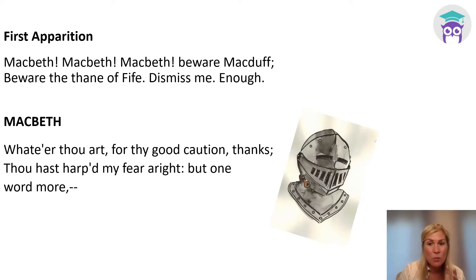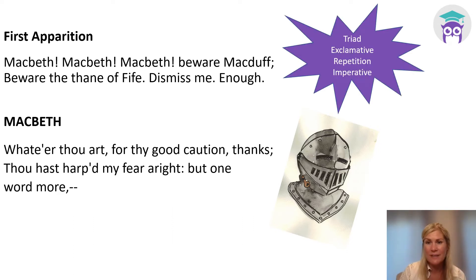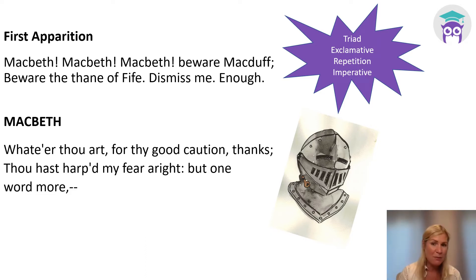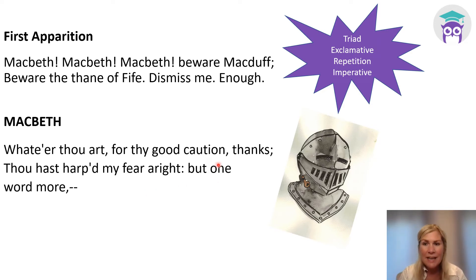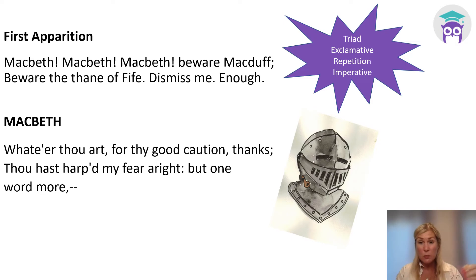The first apparition appears — the one with the armoured head — and it fits the prophecy: 'Macbeth, Macbeth, Macbeth, beware Macduff, beware the Thane of Fife, dismiss me enough.' There's triadic repetition, exclamatives, repetition and imperatives, so the apparition seems to be the one in control. In this moment Macbeth thinks he already had a feeling he needed to be wary of Macduff, and as always he wants to know more — 'one word more' — but the apparition goes. He's left on tenterhooks, but apparition one simply reaffirms what he already thought.